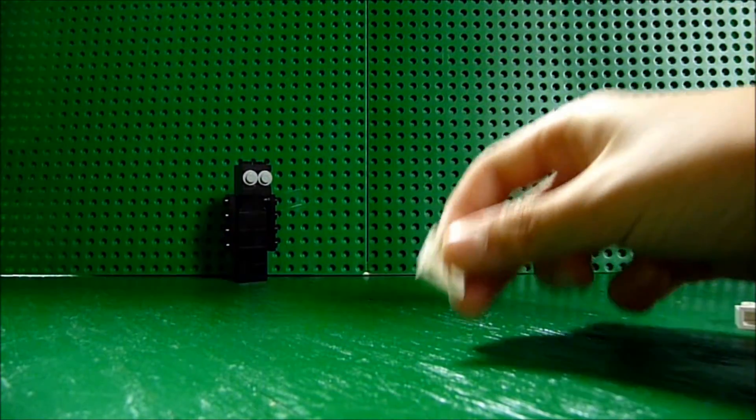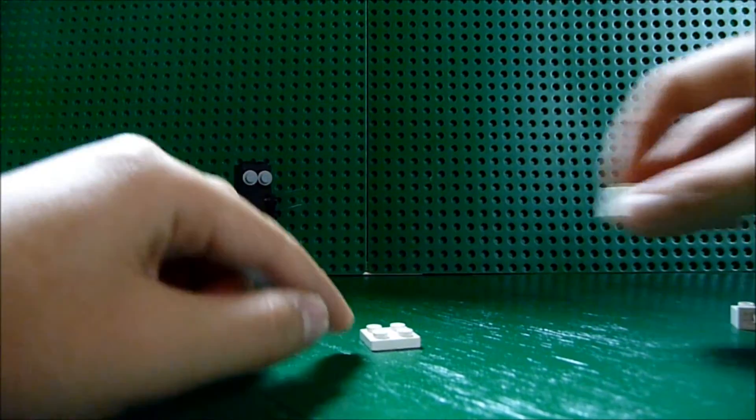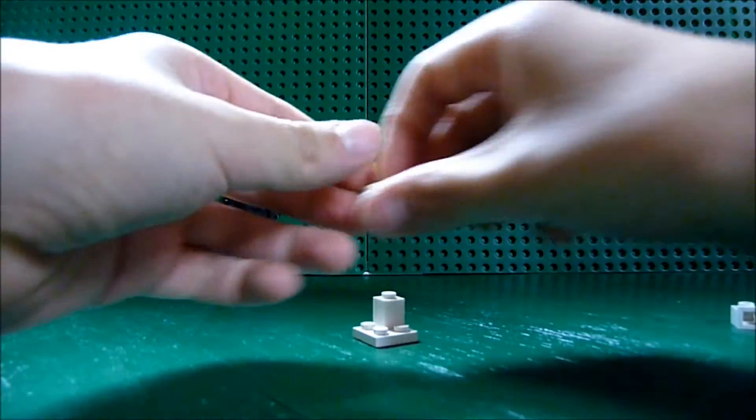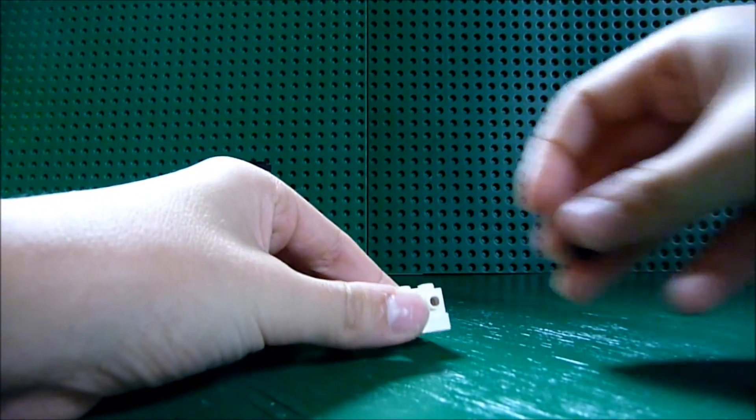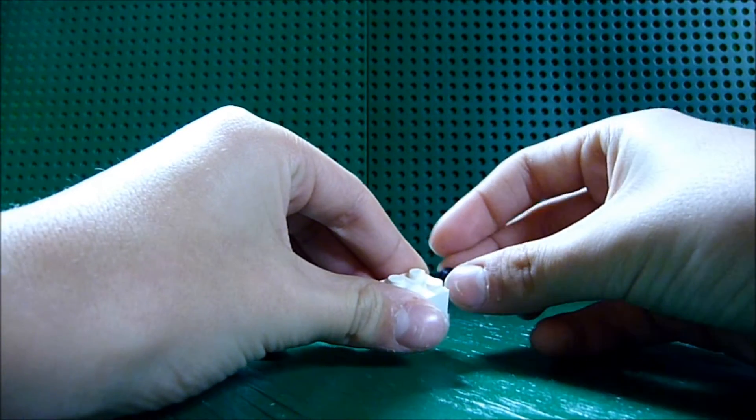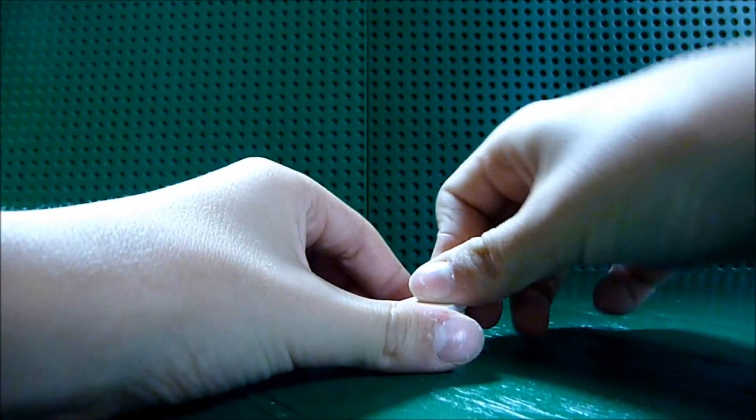Okay, to build it, you get the two by two plate, and put the two one by one headlight bricks, and put two black pieces for his hands to go on there, and put a two by two tile.